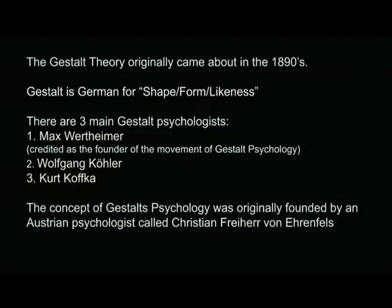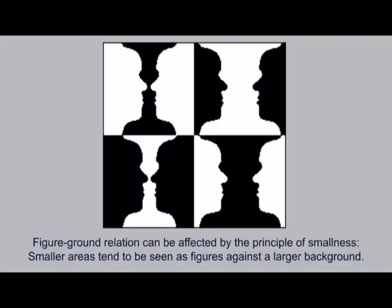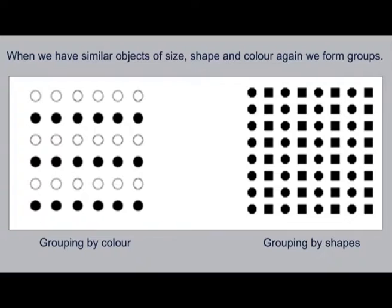The possibility keeps unfolding — it is a very simple diagram, but when an artist uses this principle in a painting, the scope of visual communication keeps expanding. In this drawing, the figure-ground relation can be affected by the principle of smallness — smaller areas tend to be seen as figures against a larger background — and you can have this ambiguity where it is up to you to identify a form and treat the rest as background, reversing one from the other. When we have similar objects of size, shape, and color, we form groups — grouping by color or grouping by shape.